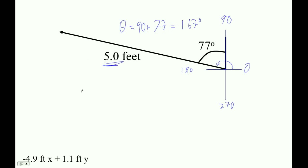And then here's our magnitude. So it's going to be 5 cos 167 feet in the x direction, plus 5 sin 167 degrees, those are degrees, feet in the y direction.